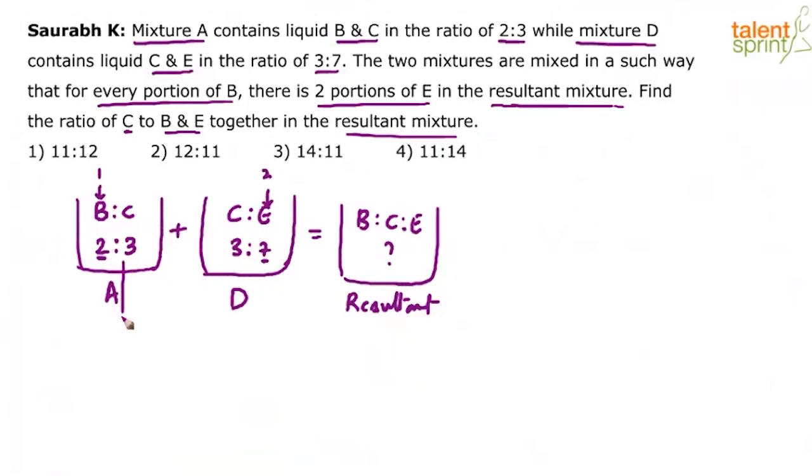How can that be done? See, this ratio here 2 is to 3 can be taken as 14 is to 21. Yes or no? 2 is to 3 is nothing but 14 is to 21. Similarly, the ratio 3 is to 7 can be taken as 9 is to 21.